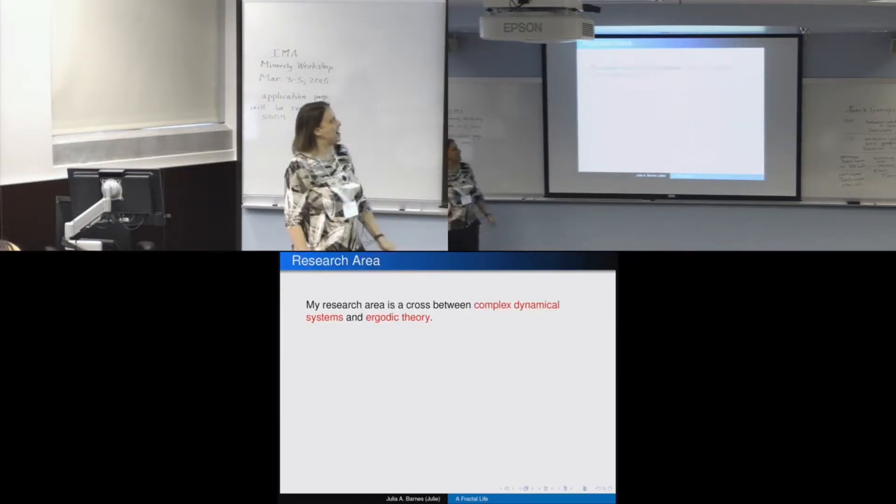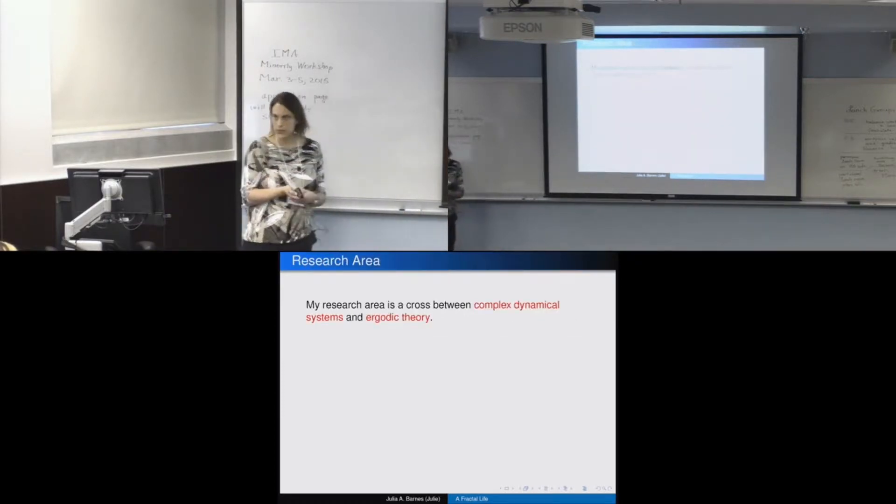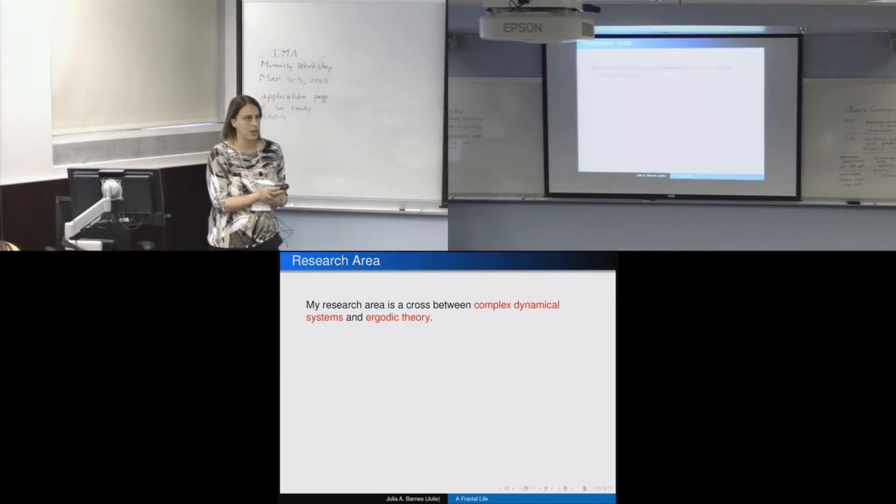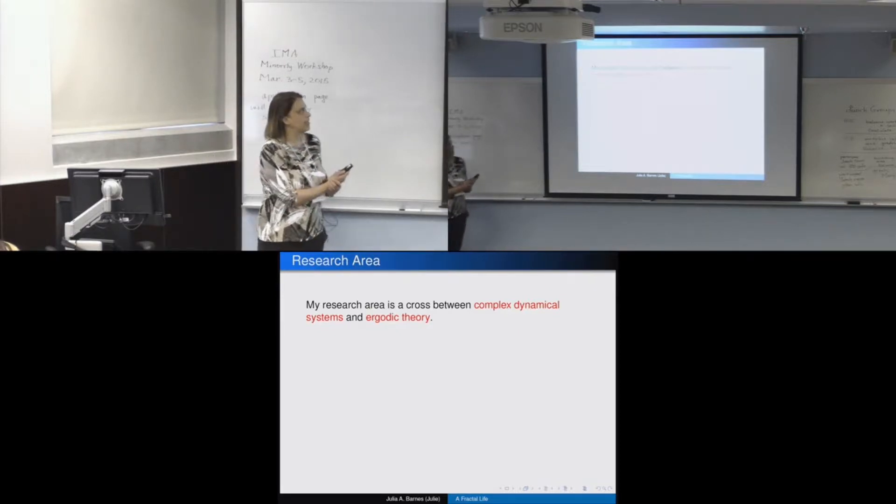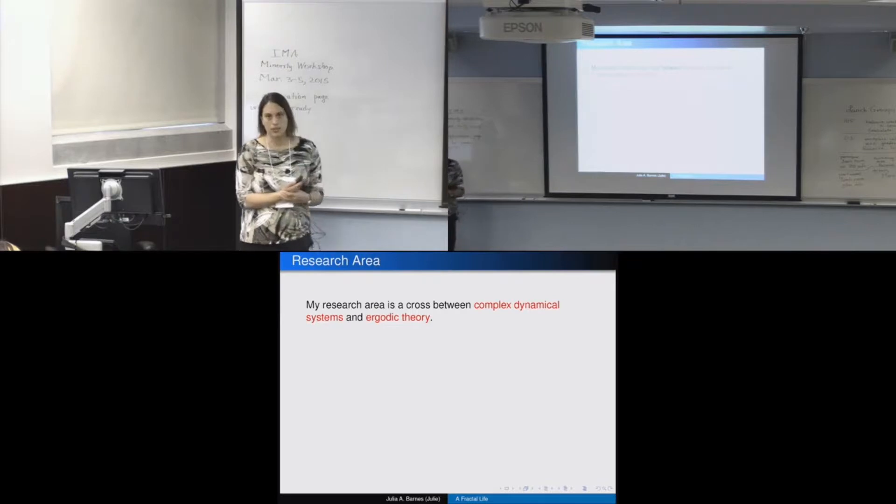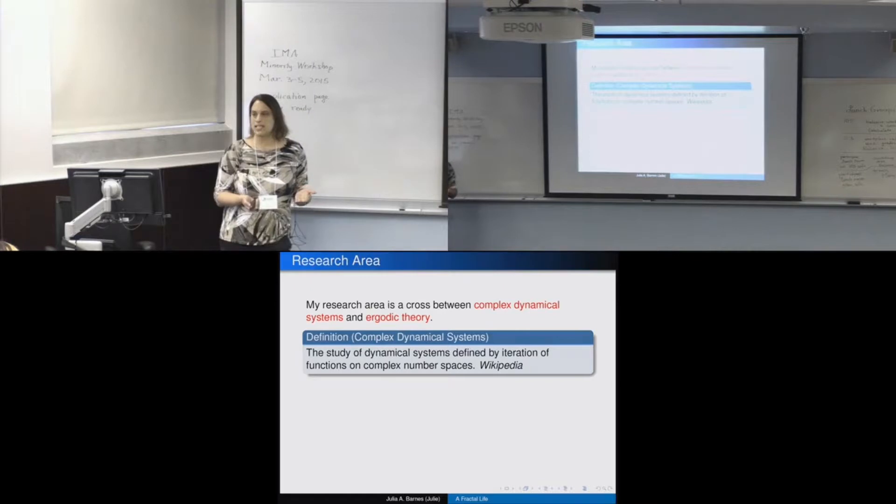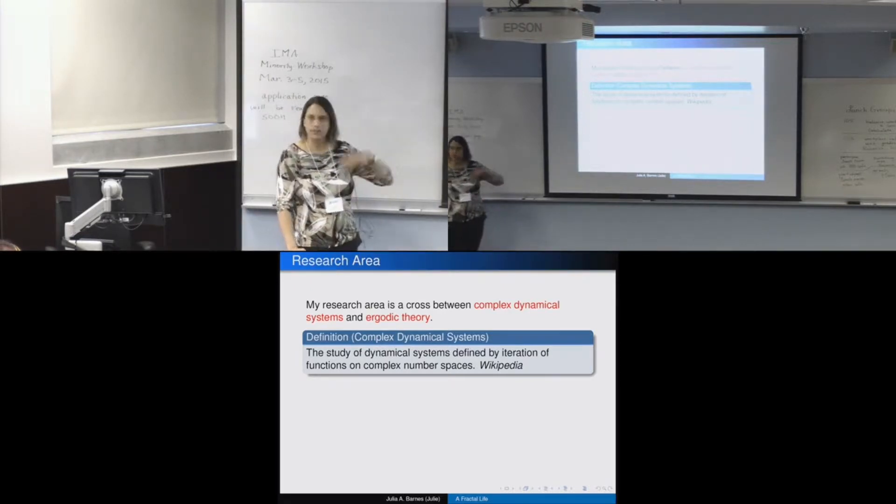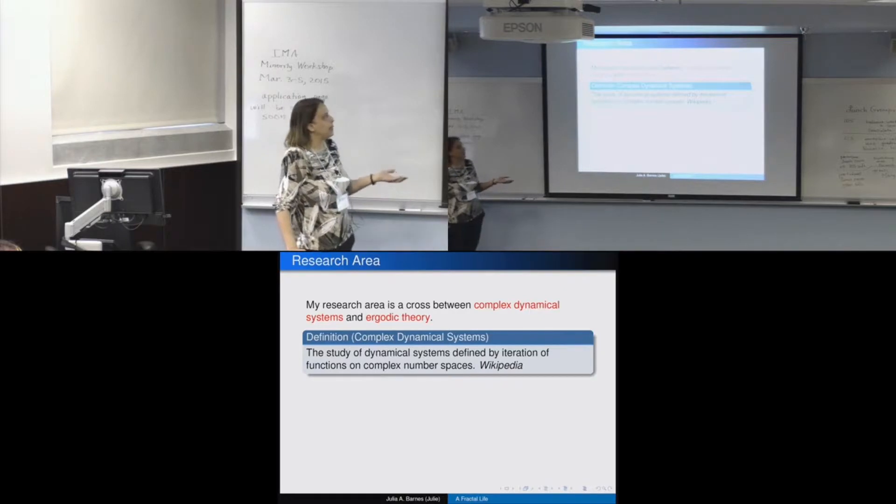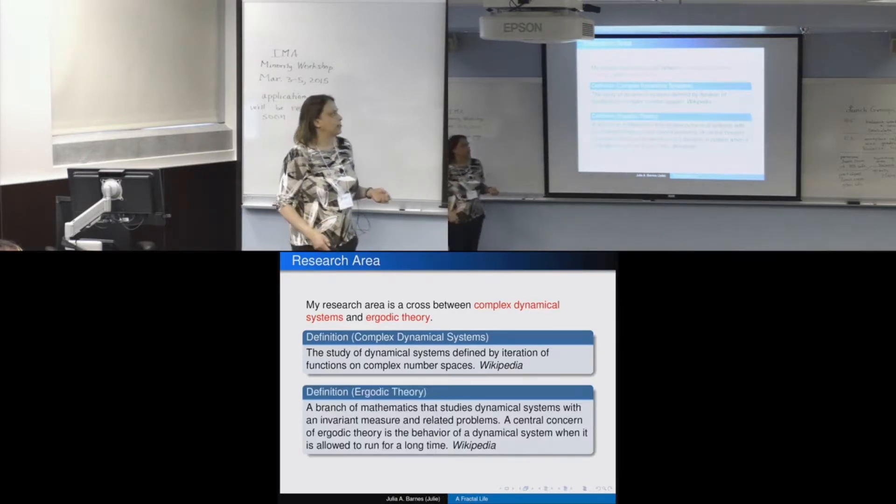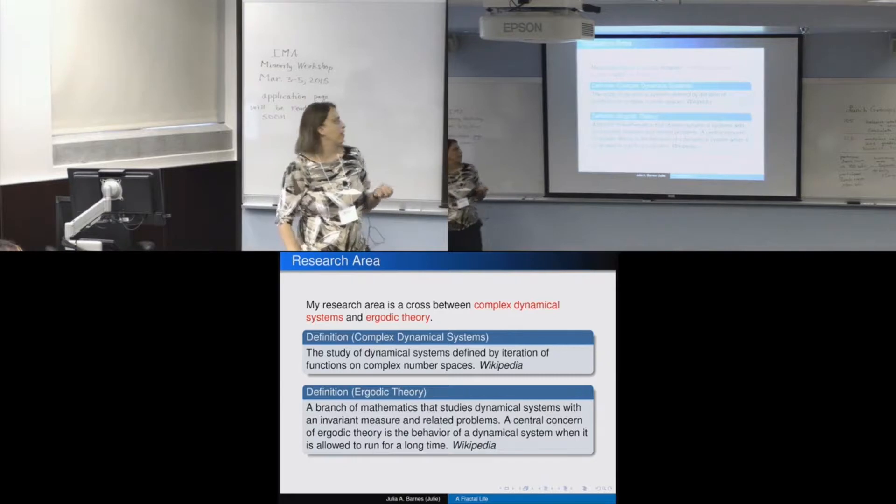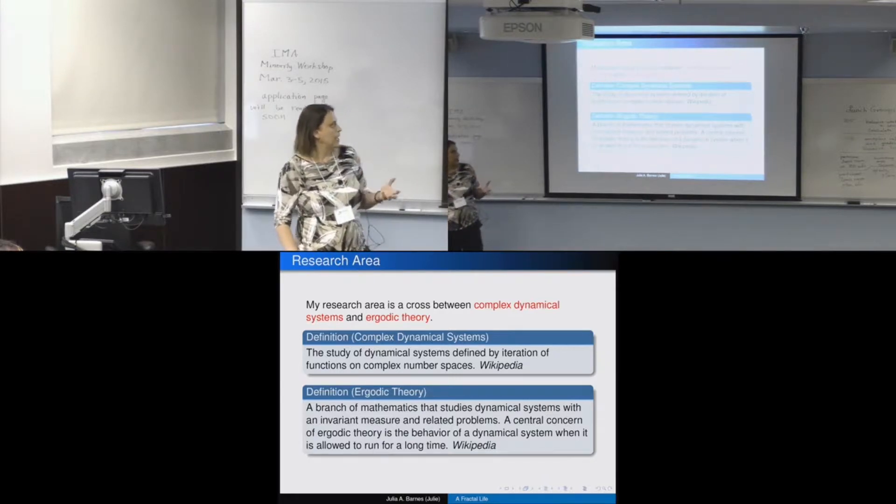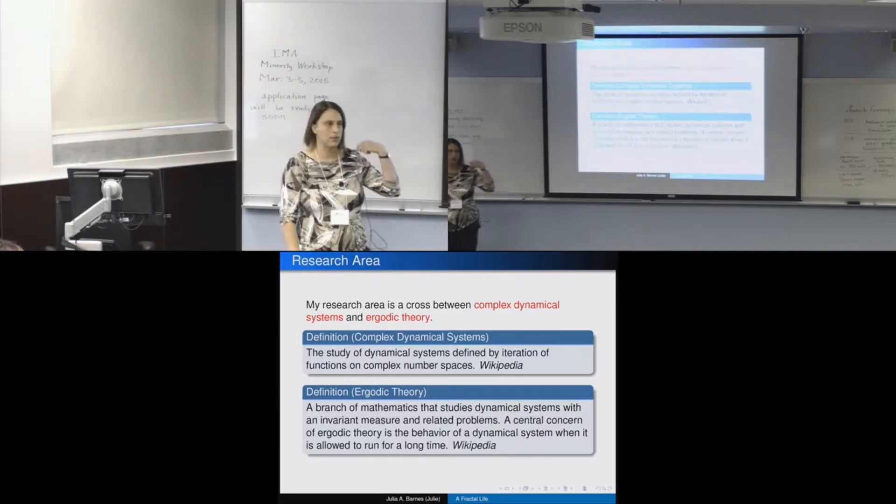My research area is related to fractals. My research area, if I go back to when I was in graduate school, I got my PhD at UNC Chapel Hill, and I did a cross between complex dynamical systems and ergodic theory. So complex dynamical systems just means that you're looking at how functions change over time, you iterate over and over again, and your domain is the complex numbers.